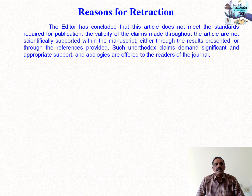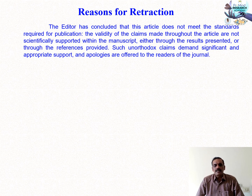The sixth reason: the editor concluded that the article does not meet the standards required for publication. The validity of the claims made throughout the article are not scientifically supported within the manuscript. Initially a paper was submitted and the reviewer accepted it, but the claims are not guaranteed. At a later point, the editor may retract articles based on the results presented or the references provided. Improper citations inside the text also lead to retraction.